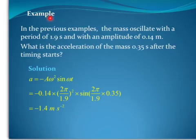For the example, we just quote the previous example, where the mass oscillates with a period of 1.9 seconds and an amplitude of 0.14 meters, and you just have to work out the acceleration of the mass 0.35 seconds after the timing starts. So you just use that formula derived from the previous slide. And you put in the numbers and you get the answer here.